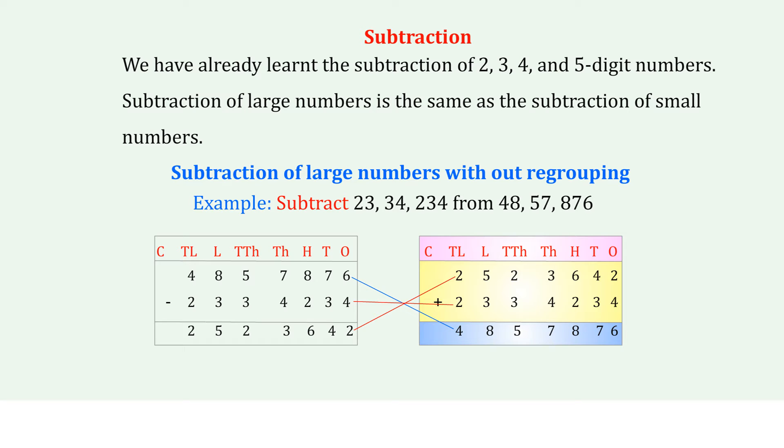The numbers are arranged in the place value table — Crores column: 4, 2, 3; then 4. After subtraction, we get: 2, 5, 2, 3, 6, 4, 2.